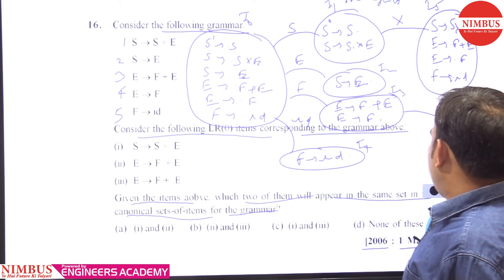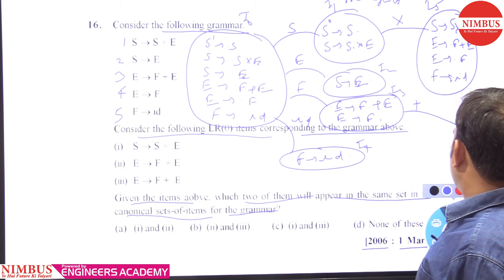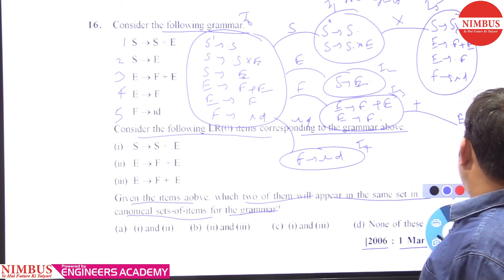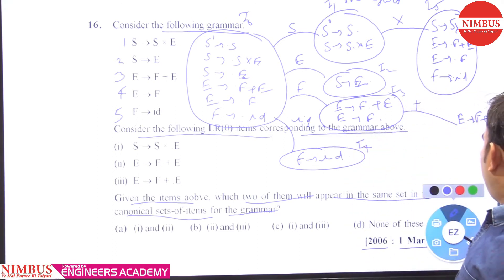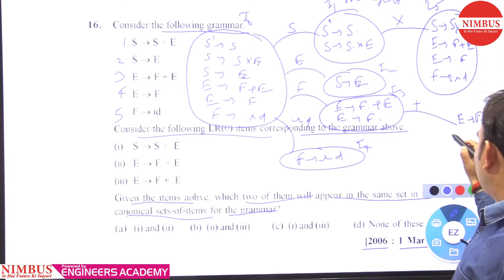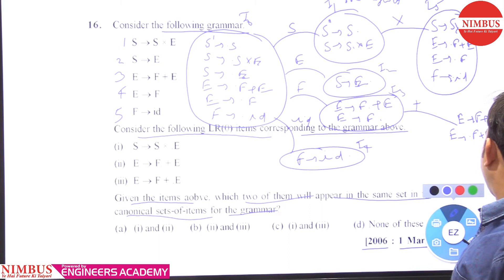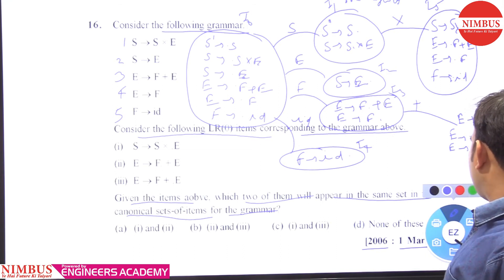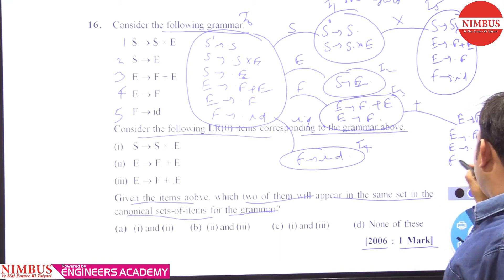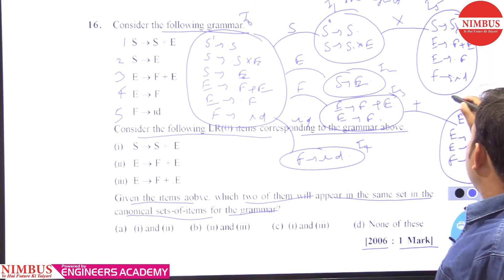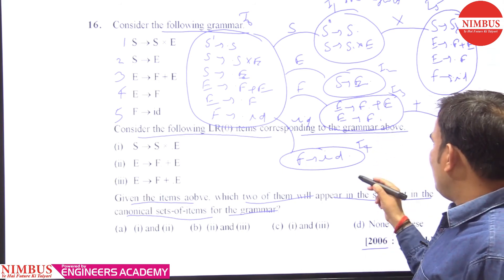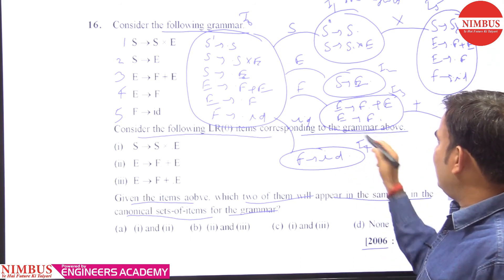The reduced items need nothing further. When we give plus (+) input, we get E → F+.E. Dot is encountered in front of E, so we add E → .F+E and E → .F. Dot is also in front of F, so we add F → .ID. This is I6 state.